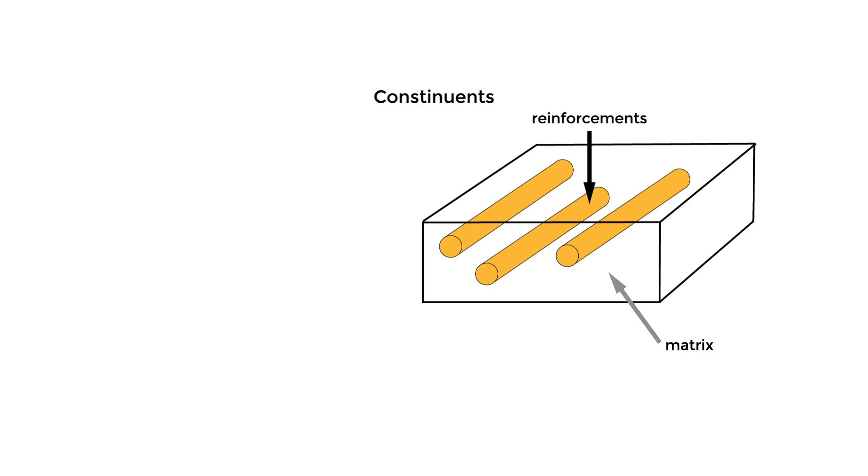Now, the matrix and reinforcement often have very different properties. This is done on purpose, as the properties of my composite as a whole are a combination of my components. We can take advantage of the best properties of both and tailor our material to a degree.